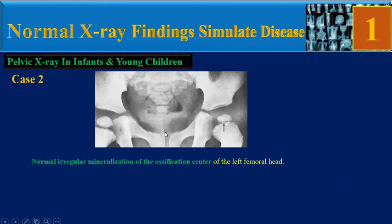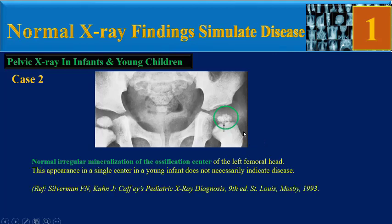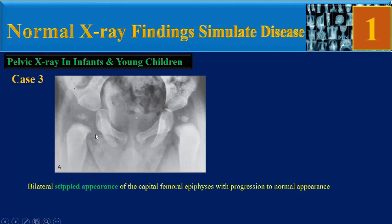Case 2: normal irregular mineralization of the ossification center of the left femoral head. This appearance in a single center in a young infant does not necessarily indicate disease.